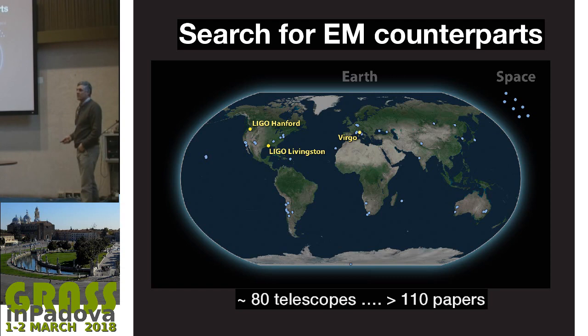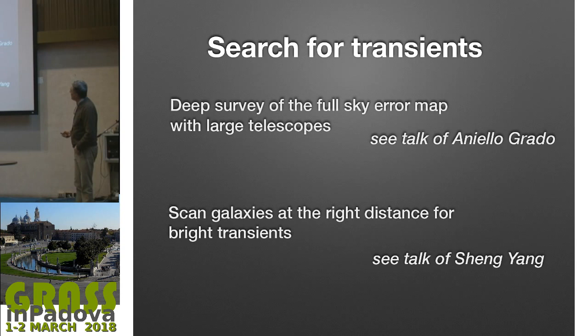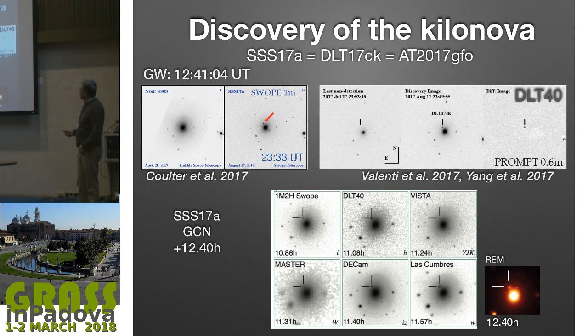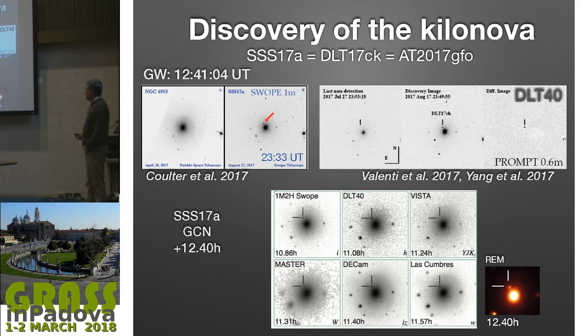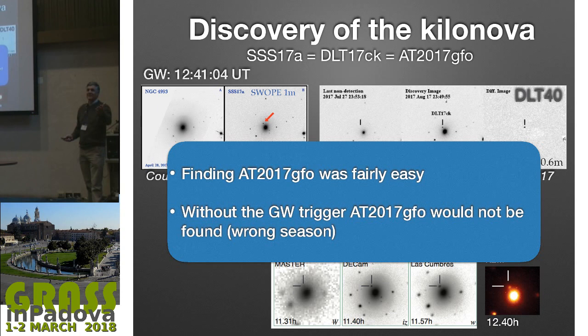After the trigger, many, many telescopes around the world were activated. We show one slide demonstrating that the event was detected independently by at least six groups—six groups imaging the same galaxy within one or two hours of the first image. The conclusion is that if so many groups were able to detect the transient independently, finding the object was fairly easy.